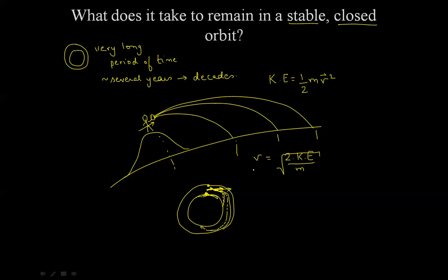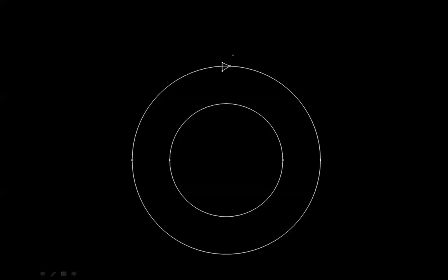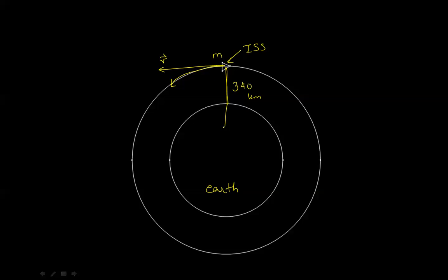But why does it stay there? Let's see. Suppose this is the Earth and this is the International Space Station, the ISS. The ISS orbits at an altitude of 340 km above mean sea level, going in a closed orbit in a counter-clockwise direction. The ISS has some physical mass. In orbit, two things are happening: first, it has some tangential velocity; and second, at all points in time, the ISS is acted upon by the force of gravity, which acts straight down toward the center of the Earth.